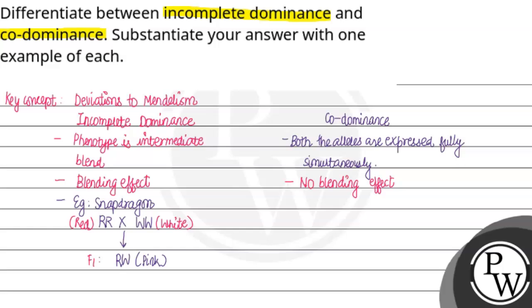The example of co-dominance is the ABO blood type. In the AB blood group, represented as I^A I^B, both A and B alleles are fully expressed, which is why the AB blood group appears. This is the example of co-dominance. So this is the difference between incomplete dominance and co-dominance. Hope you understood the solution, thank you.